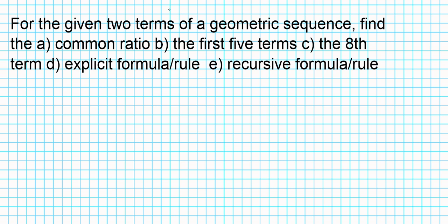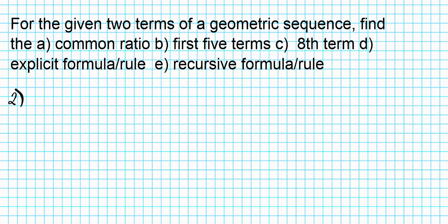Let's take a look at question number 2. For the given two terms of a geometric sequence, we need to find: A) the common ratio, B) the first five terms, C) the eighth term, D) the explicit formula or rule, and E) the recursive formula or rule. We're given that the third term A3 equals negative 27 and the fourth term A4 equals 81.